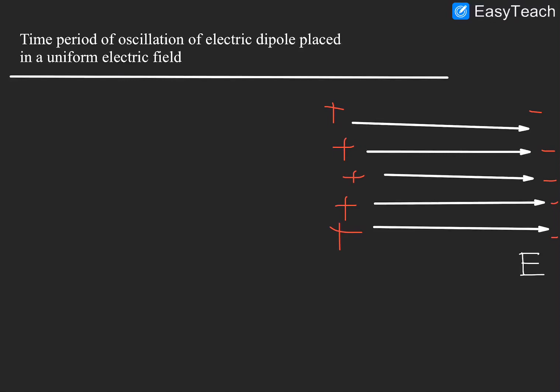Now I am keeping an electric dipole in this field. This is my electric dipole, which will have one side positive and the other side negative. For my dipole, this is the negative side and this is the positive side, and its total dipole length is 2a.